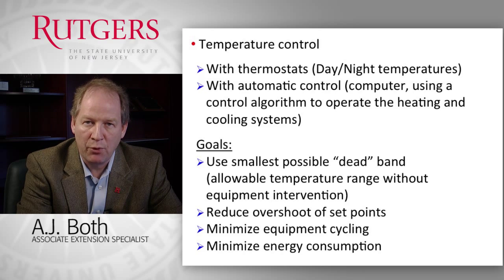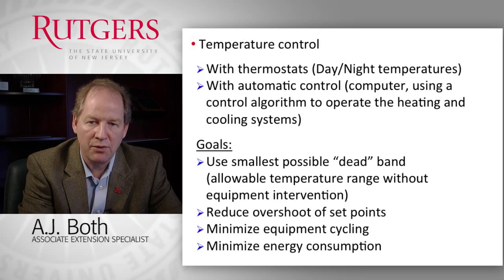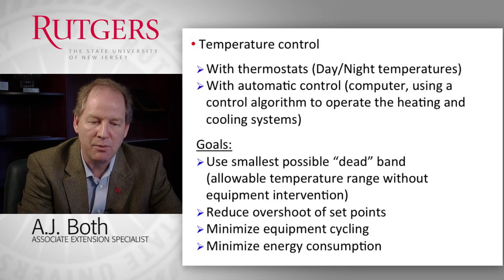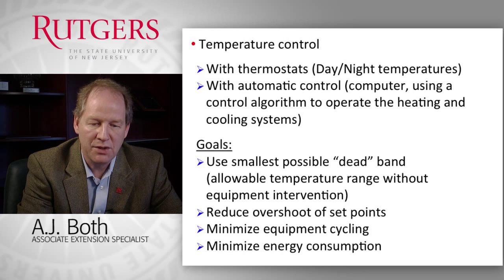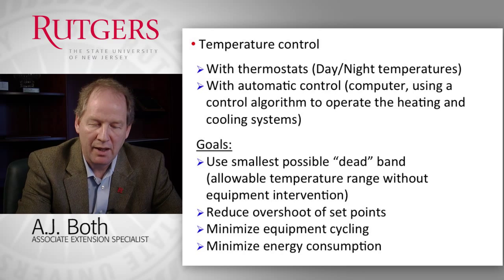We obviously want to reduce overshoot of the set points as much as possible — we don't want the heating system to overshoot and end up at 72, 73, or 74 degrees. So we want to shut off the heating system long before things tend to overshoot, to save energy. We also want to minimize equipment cycling as much as possible because that has a negative impact on the longevity of the various systems. And the ultimate goal is, of course, to minimize energy consumption. Temperature control, although it sounds easy, can be relatively complicated and includes many different aspects of control strategies for proper implementation.